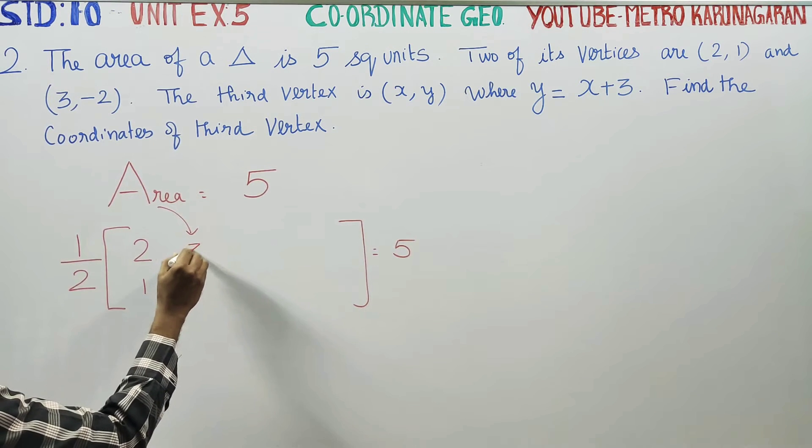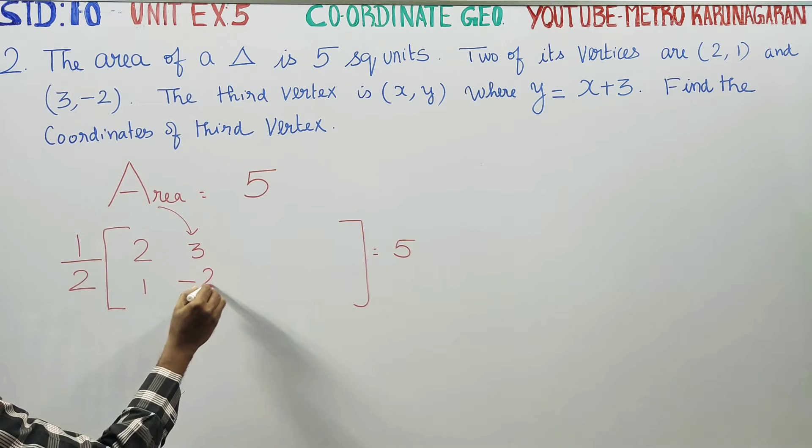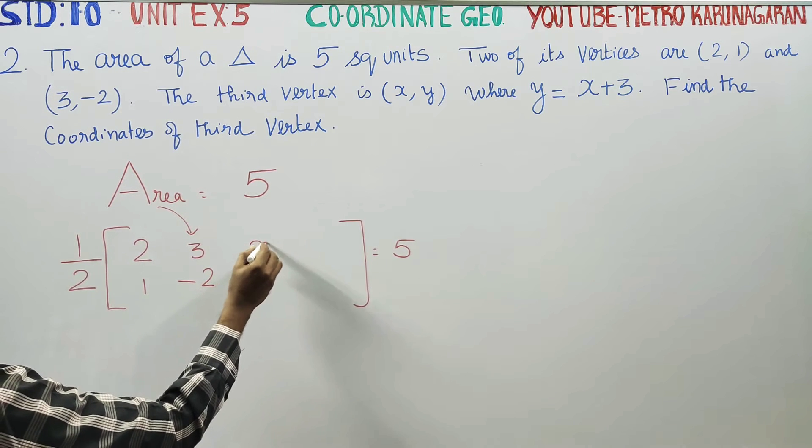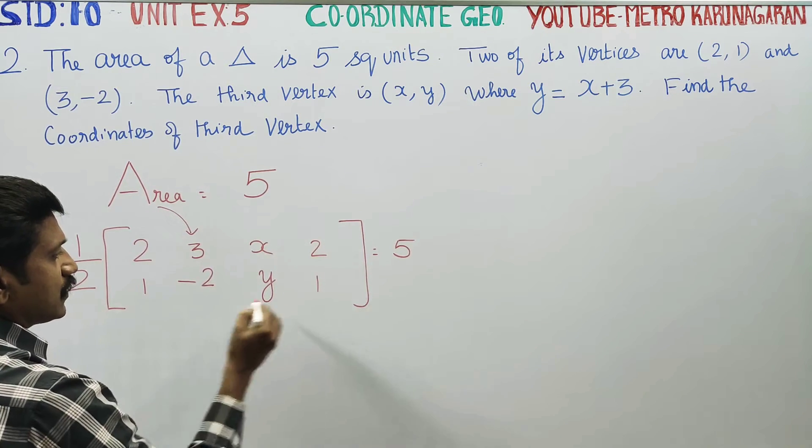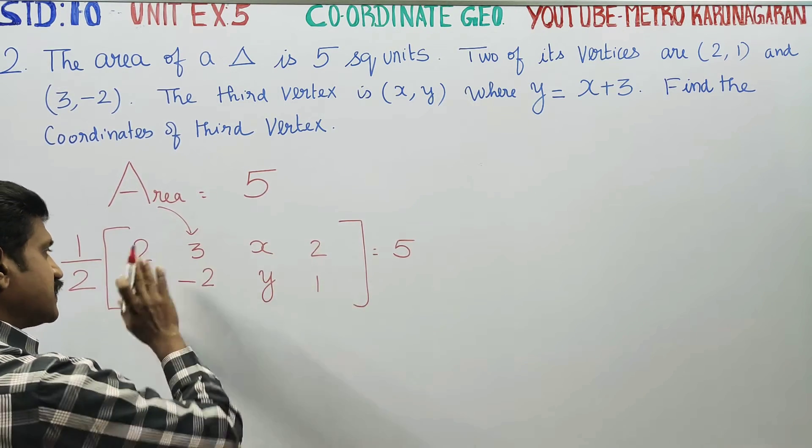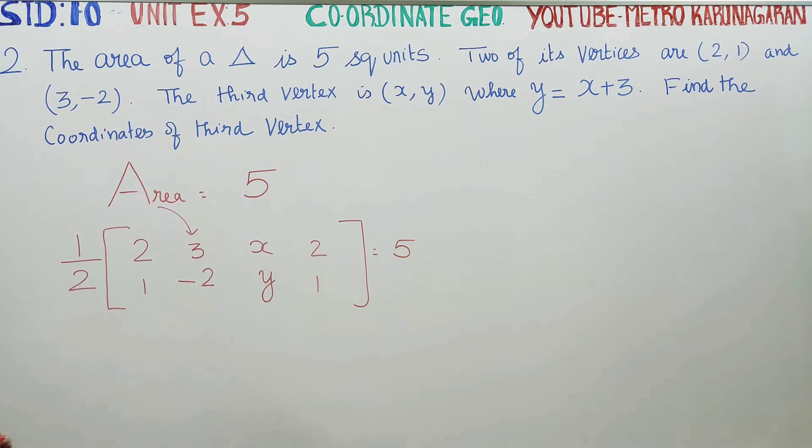Second vertex is (3,-2). Third vertex is (x,y). Fourth vertex is (2,1). The fourth set is the first vertex again. This is the area of the triangle.